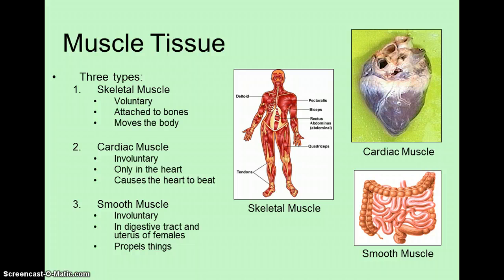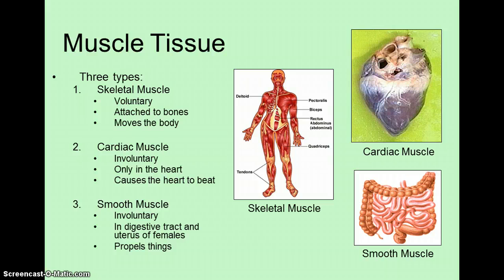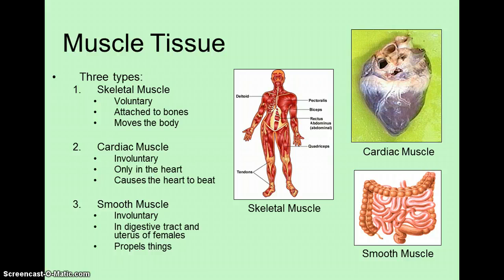Muscle tissue in our bodies is of three types. The first is skeletal muscle, which gets its name from the fact that it is attached to our bones. When skeletal muscle contracts, it physically shortens and pulls the bones that it is attached to closer together. Through this mechanism, skeletal muscle is responsible for all of the movements that our bodies are capable of.